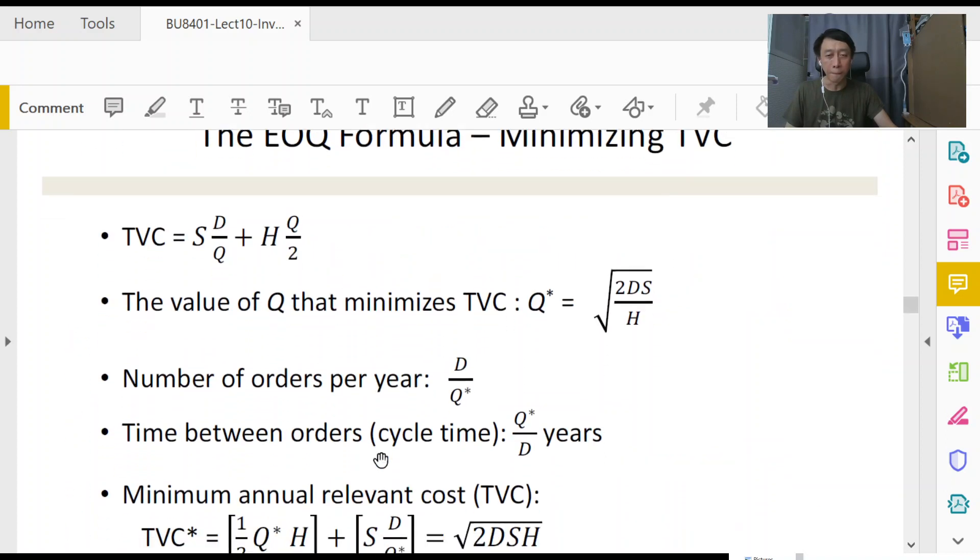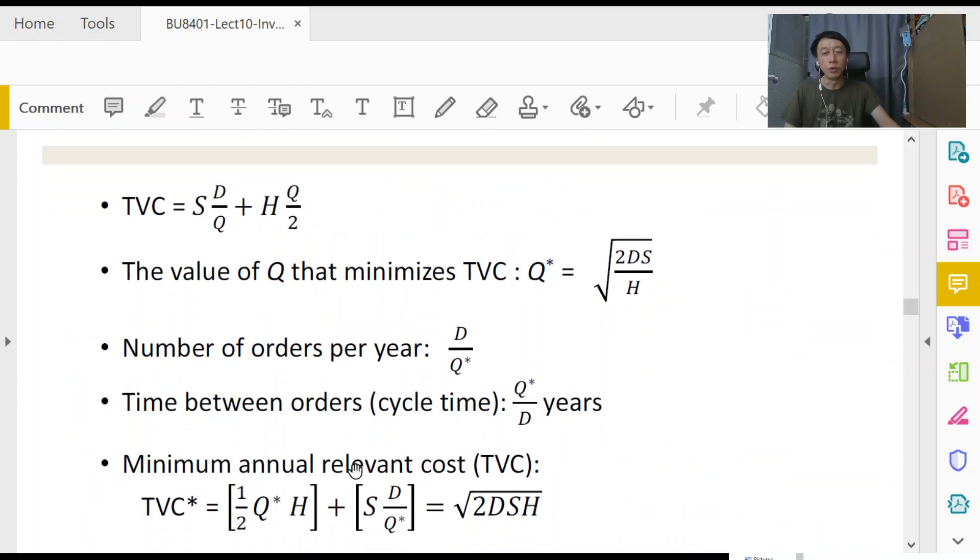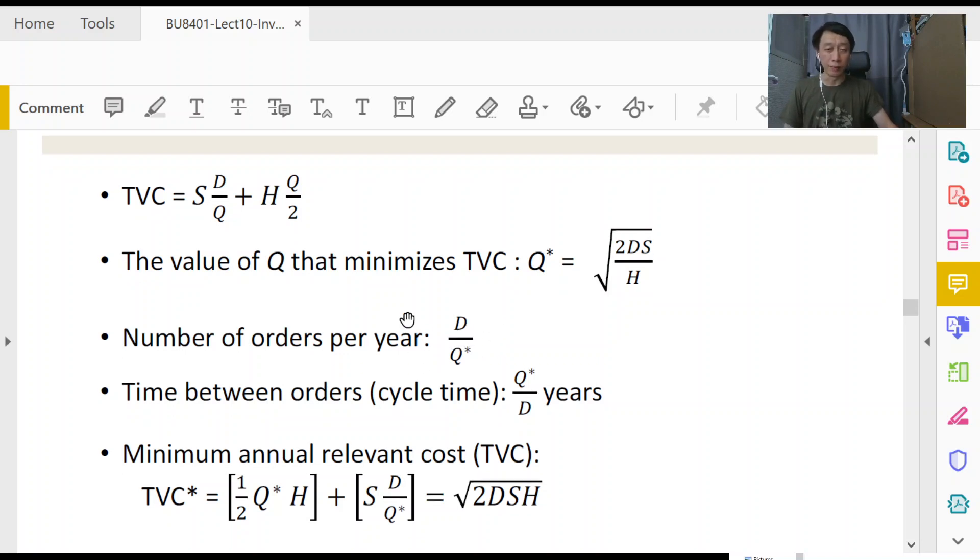You'll be asked like how many orders are there in a year for a particular business. That basically is the notion of number of triangles in the business. What about the time between orders, otherwise known as the cycle time?